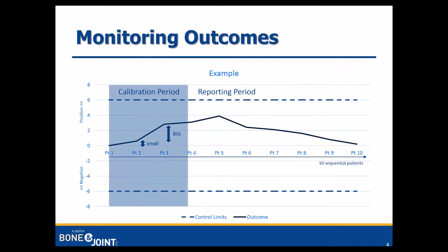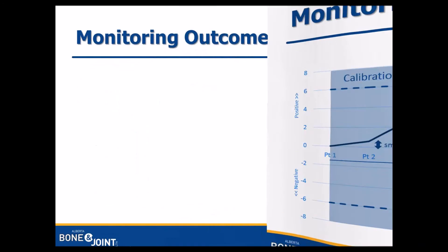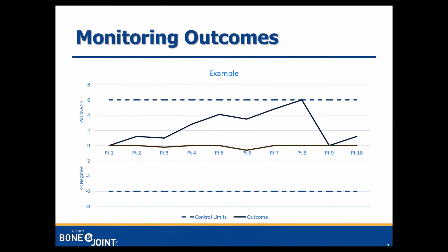We use the outcomes from the two years prior to the reporting period to calibrate the expectations going forward, so that the risk adjustment reflects current practice. QSUMs use two lines: the upper line tracks positive outcomes and the lower one tracks negative outcomes. These lines max out at zero and never cross the axis. This allows for earlier warning flags to be raised when there's a sudden shift in performance for either the positive or the negative.